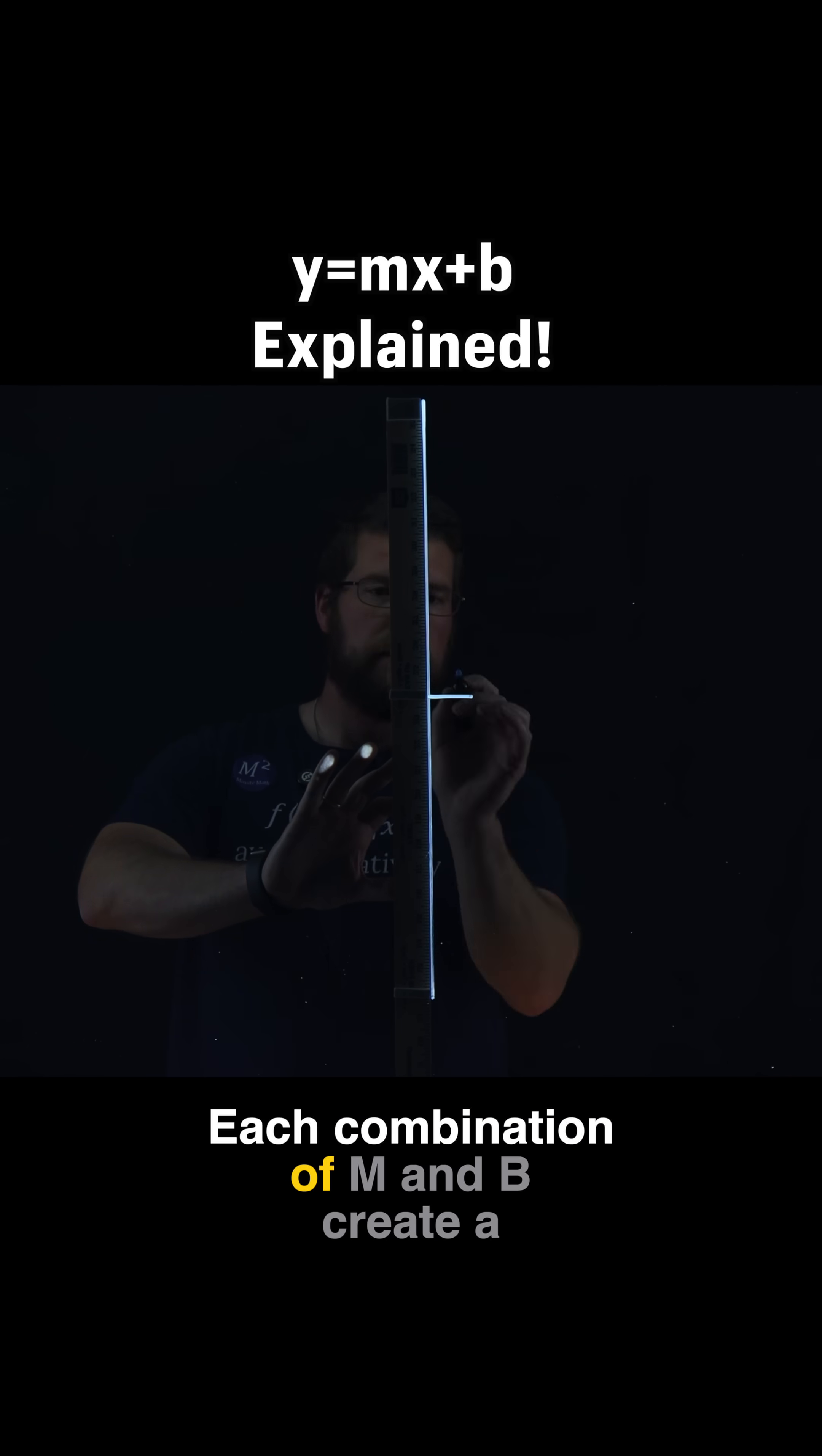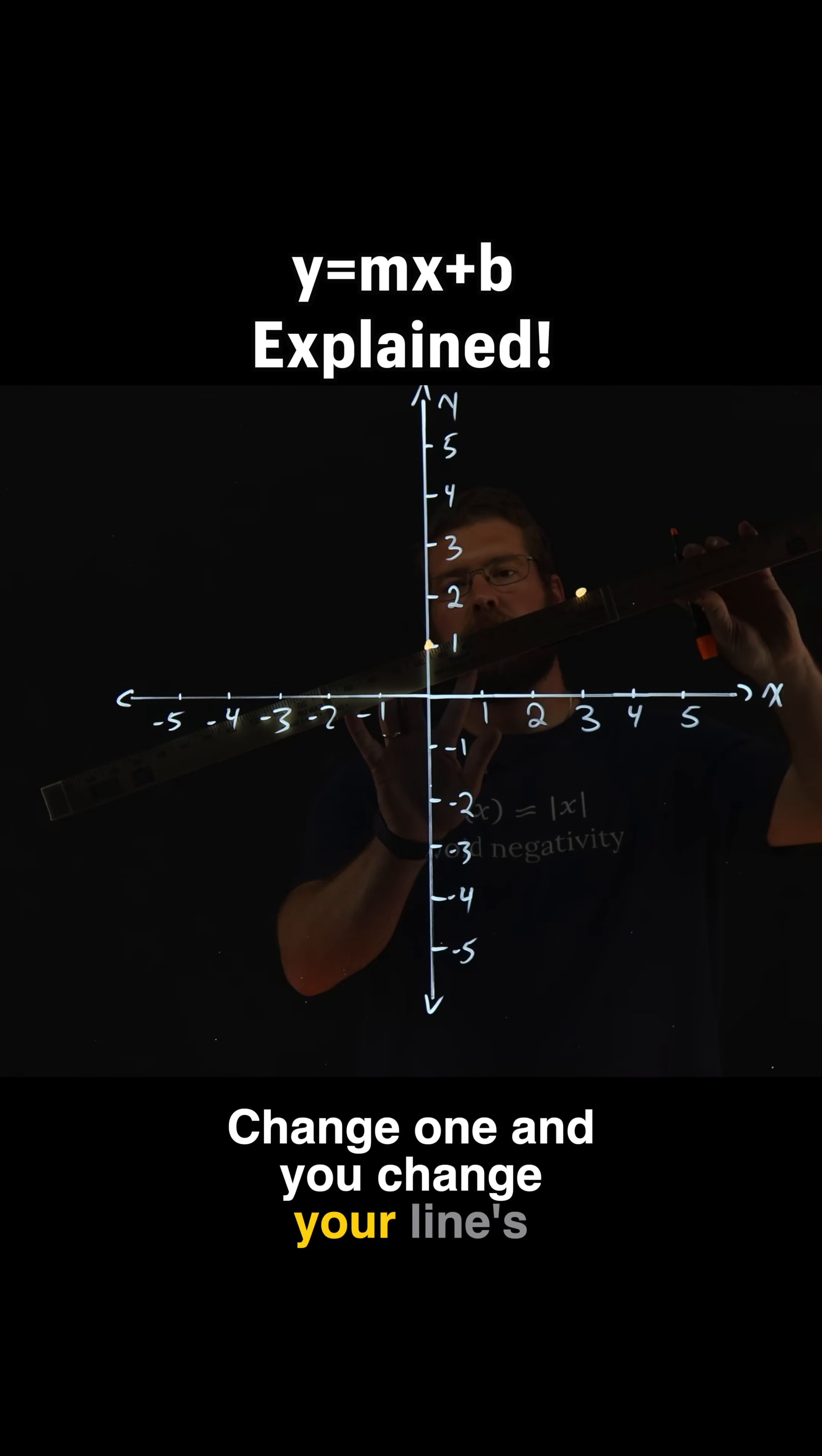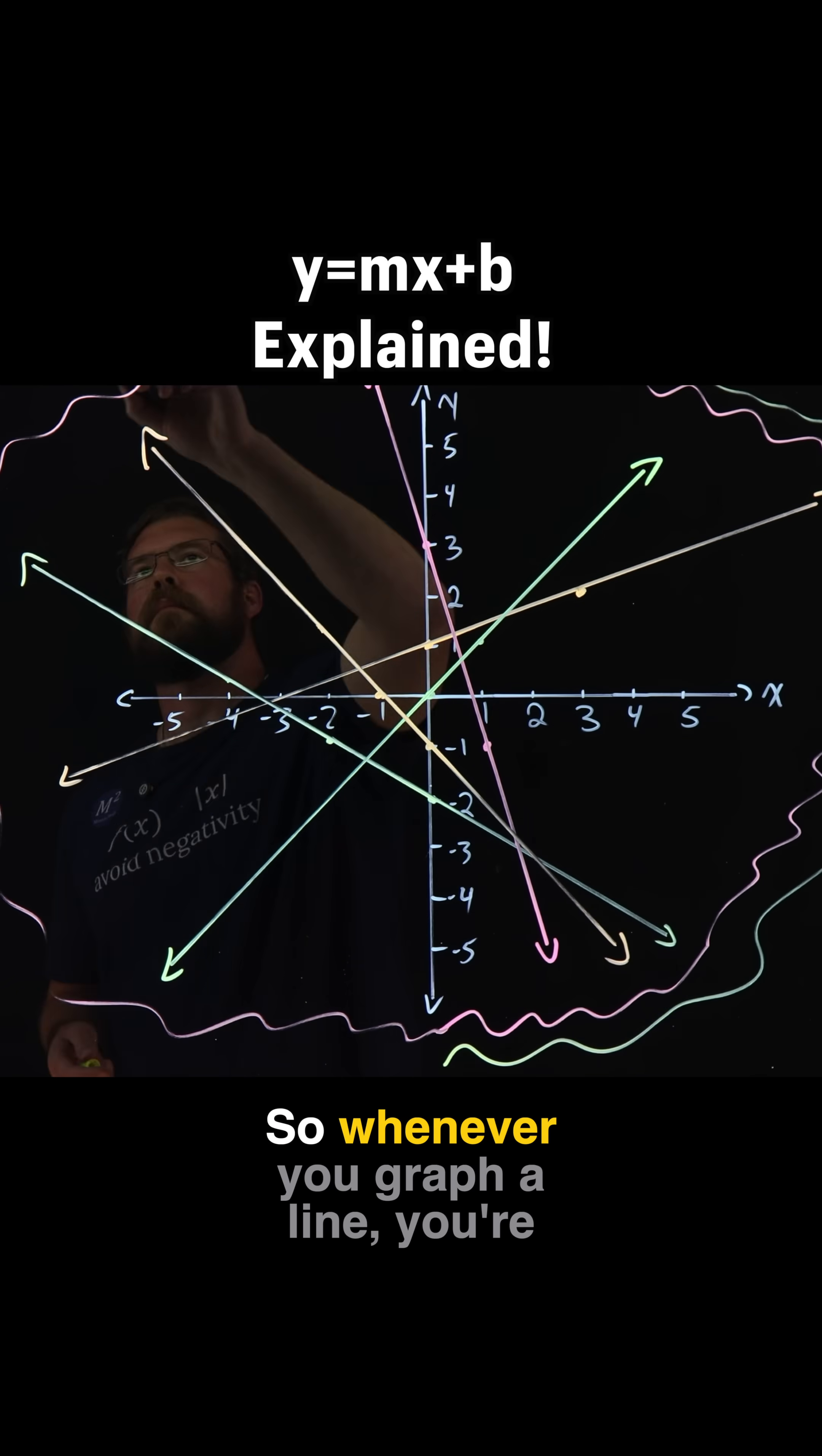Each combination of m and b creates a unique line. Change one and you change your line's story. How it starts, where it goes, and how fast it grows.